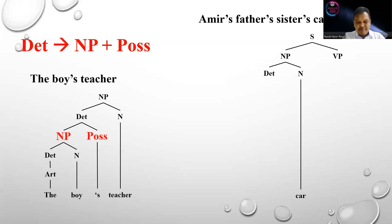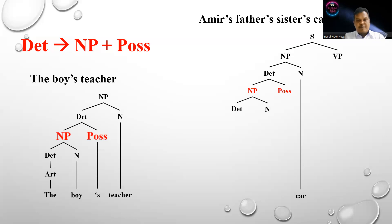Then we analyze the determiner in this noun phrase, which is NP-POS. POS must be represented by the label apostrophe S. We draw the branches for the NP, which contains determiner plus noun. Remember: when you analyze a sentence using a diagram and the label is still 'determiner,' you cannot stop the analysis. Determiner must be broken down into smaller elements.